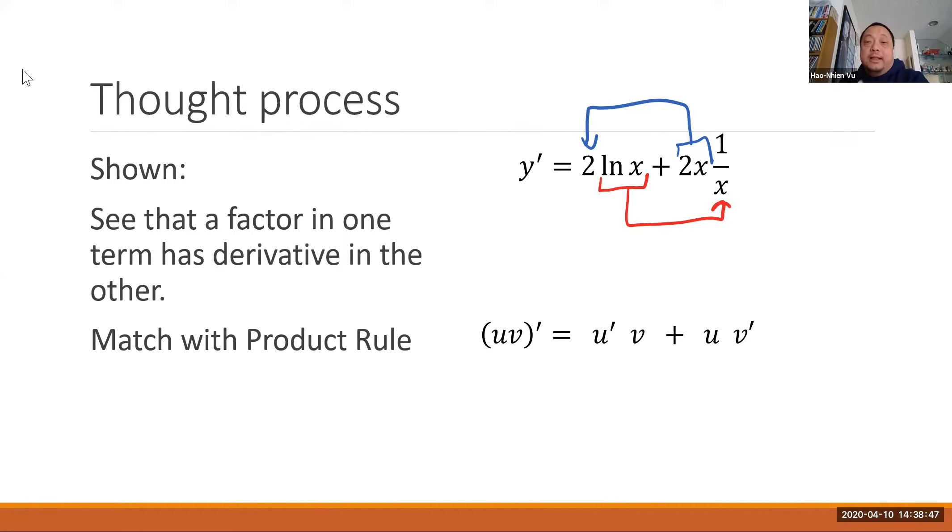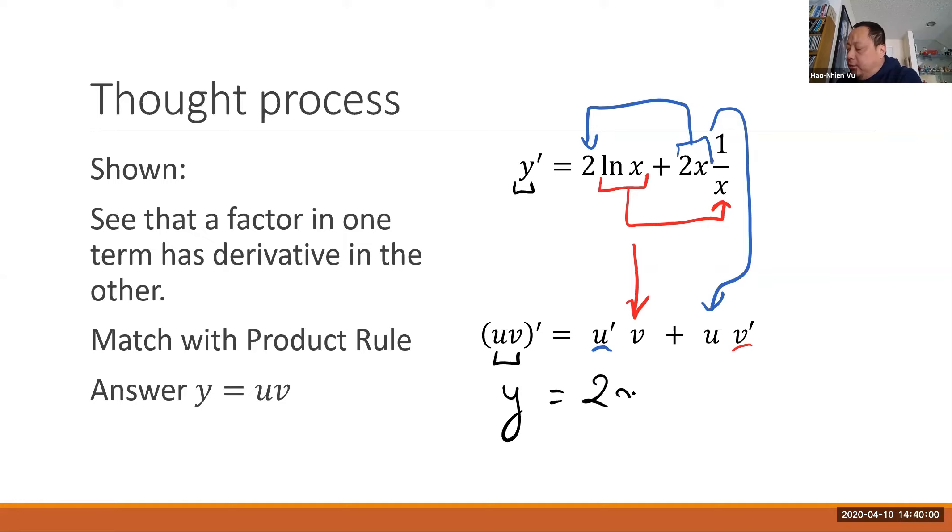So you realize that it matches the formula for the product rule where here you have a function and its derivative, and there you have a function and its derivative. So you know the answer has to be u v because the u v matches the y. So the answer has to be y equals 2x times ln x, where u is 2x and v is ln x.